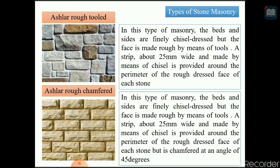The next type is ashlar rough tooled. In this type of masonry, the beds and sides are finely chisel dressed, but the face is made rough by means of a tool. A strip about 25 mm wide, made by means of a chisel, is provided around the perimeter of the rough dressed face of each stone.